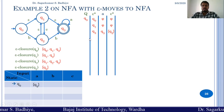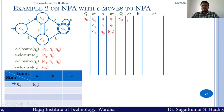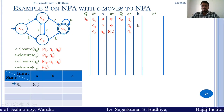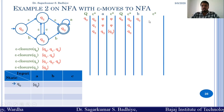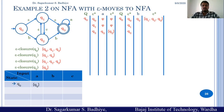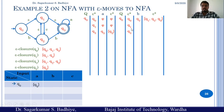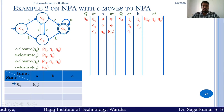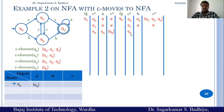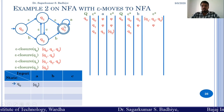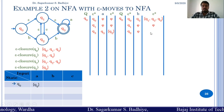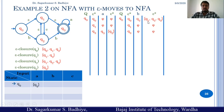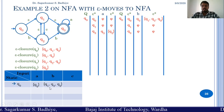Now we compute Q0 on B. Epsilon closure of Q0 is Q0, Q1, Q3. Q0 on B goes to Q2, and epsilon closure of Q2 is Q1, Q2, Q3. Q1 on B has no transition — that is phi. So Q0 on B in the equivalent NFA goes to Q1, Q2, and Q3.